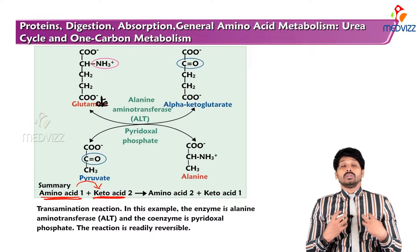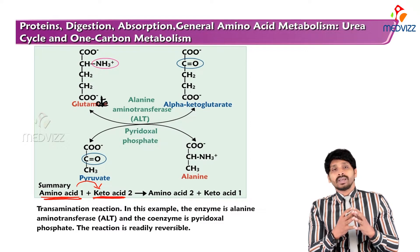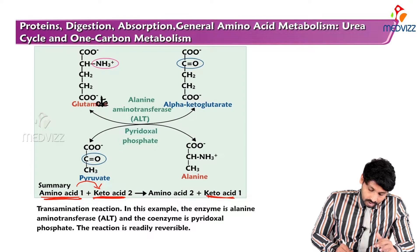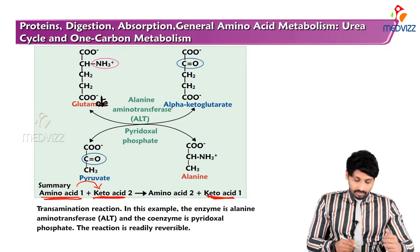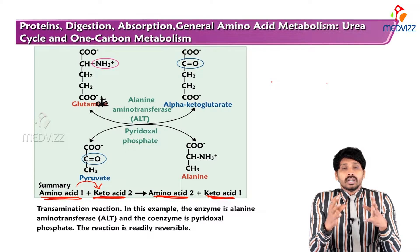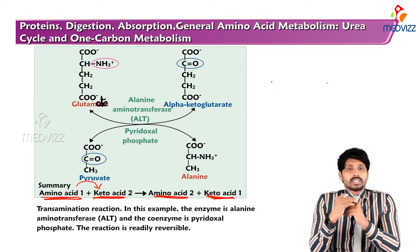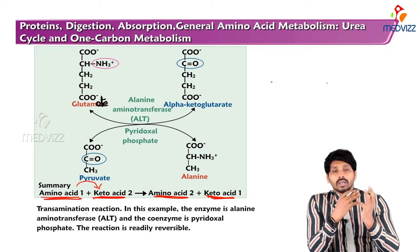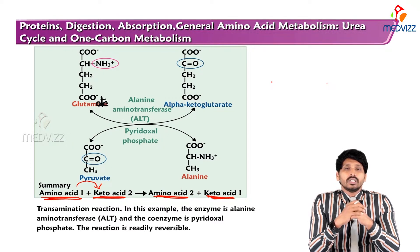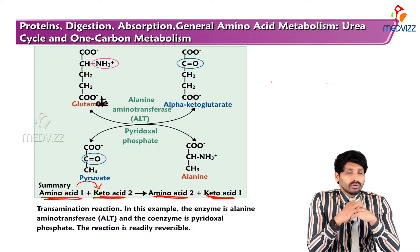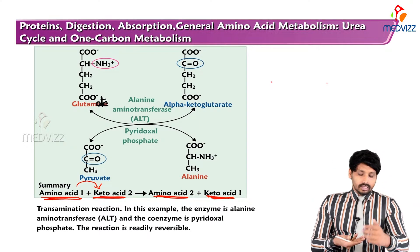Once the amino group of the donor amino acid is donated, that donor amino acid is converted to a ketoacid. The ketoacid which accepts the amino group from the donor amino acid will become a new amino acid. After donating its amino group to the ketoacid, the donor amino acid will become a new ketoacid.